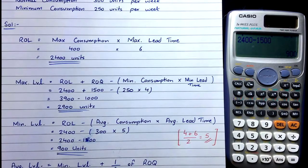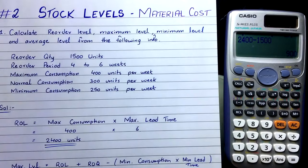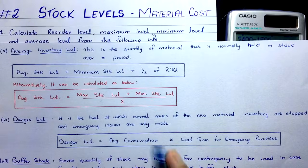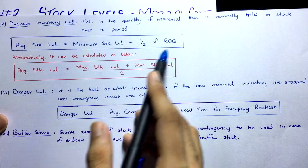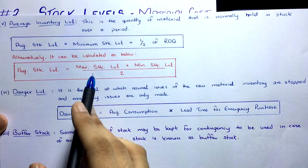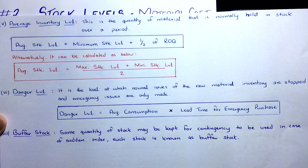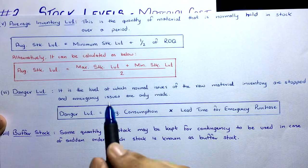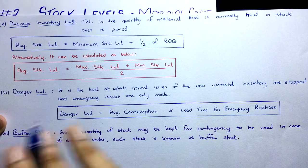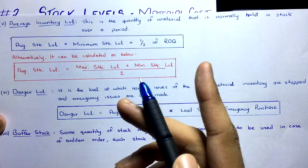Finally, we calculate the average level. There are two formulas for average stock level: Formula 1 — Minimum Stock Level + ½ × ROQ; Formula 2 — (Maximum Stock Level + Minimum Stock Level) ÷ 2. In the exam you can use either formula — both are acceptable and you will get marks either way.